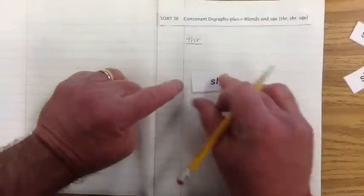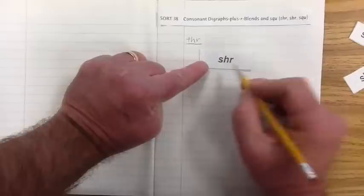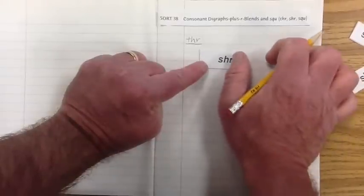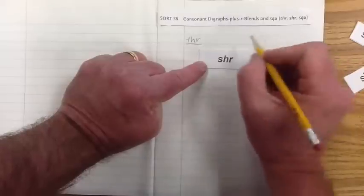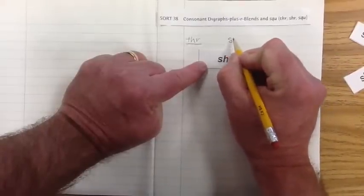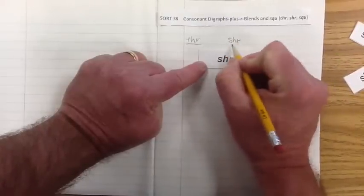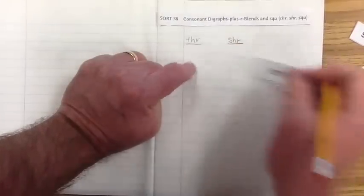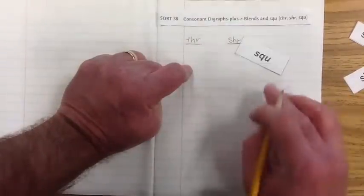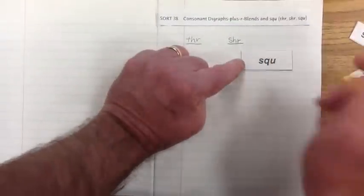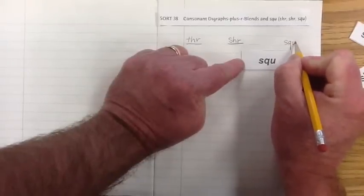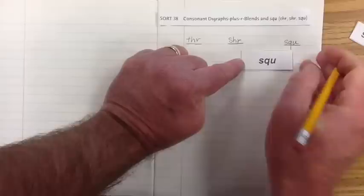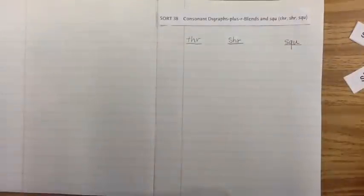Let's take a look at our next one. SHR, but again, you guys are already familiar with the SH. Now we're going to add the consonant R, and it's going to make the sound SHR. Say SHR. Our next one is the SQU. You guys know that's SQU. And then we add the U, and it's SQU.